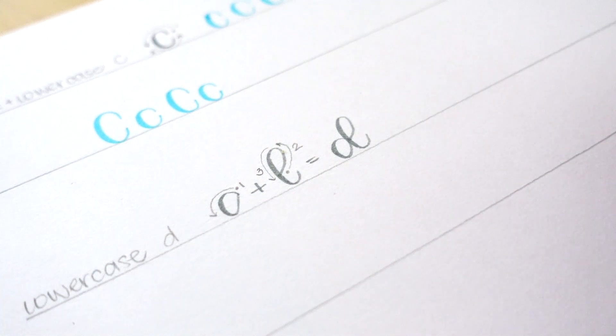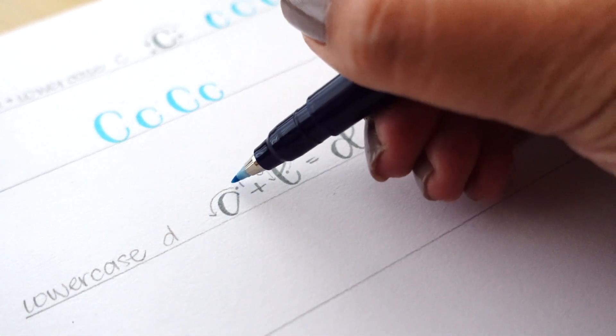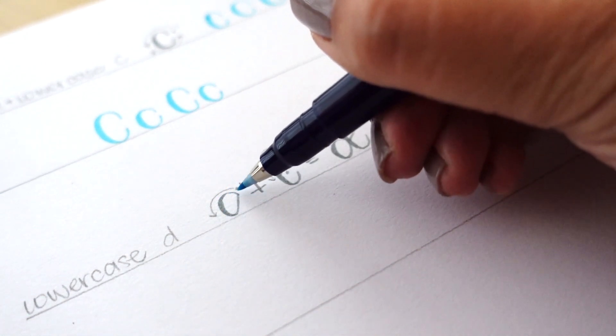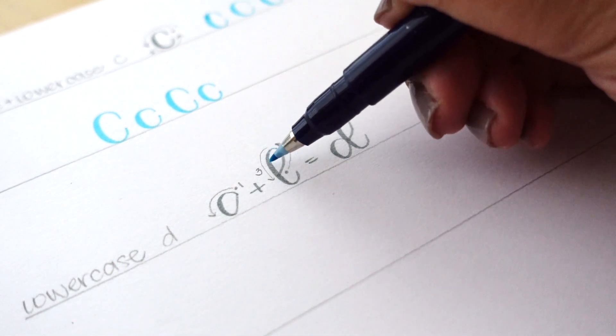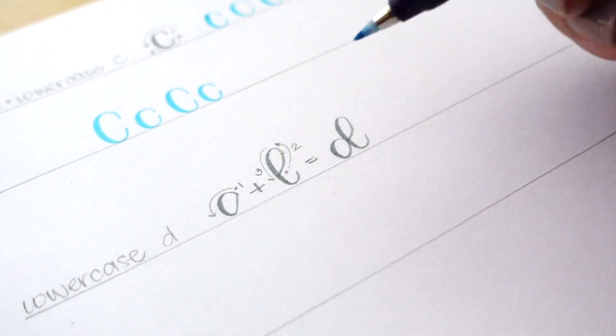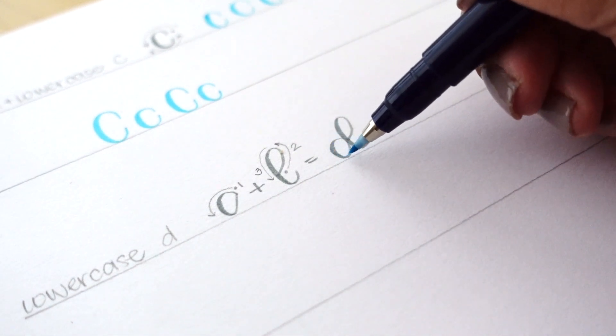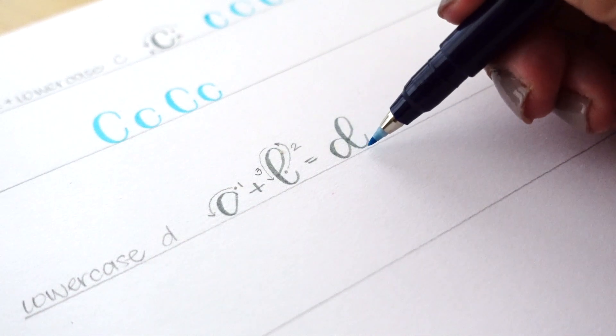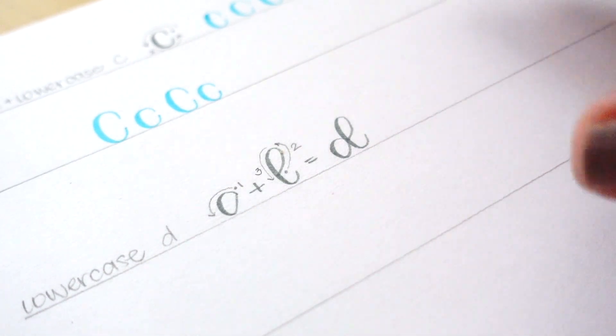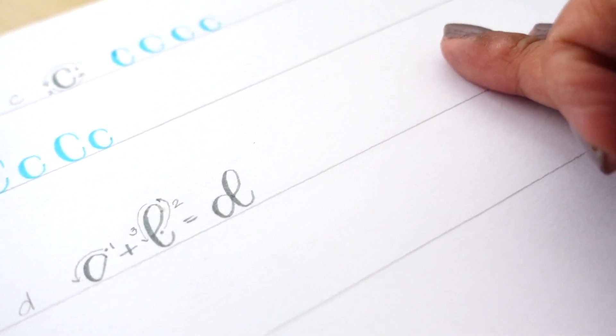The lower case D is one of my favorite letters to do. Start off with an oval stroke, lift your pen, and then add an ascending loop. The reason this is one of my favorite letters is because you can always stylize it in so many ways. Once you've figured out the basic letter form, you can modify it to fit your specific style.